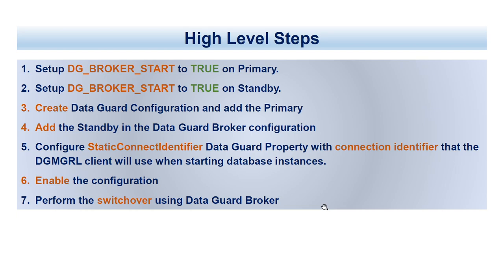Here are the high-level steps: We will set the DG_BROKER_START parameter to true on both primary and standby. We will create the Data Guard Broker configuration, add the primary, then add the standby into that configuration. We will set the static connect identifier that the DGMGRL client will use when starting instances, then enable the configuration, and finally use the broker to perform the switchover.